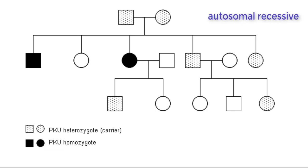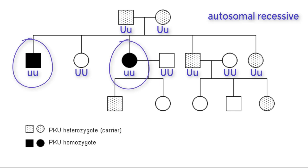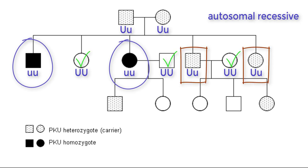PKU is an autosomal recessive disorder where, if expressed, it mutates the gene that creates an enzyme used to break down an amino acid called phenylalanine. If not broken down, this amino acid will build up in the body and can cause problems with development. As we can see in the pedigree, both of these grandparents are carriers for PKU, meaning they both have the heterozygous genotype. They do not have the disease but can pass it to their offspring. Two of their seven offspring receive the homozygous recessive form and express having PKU.